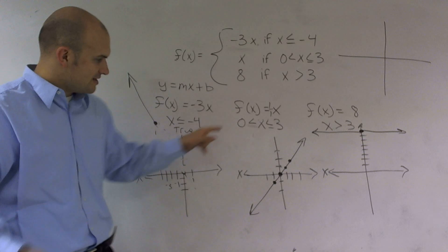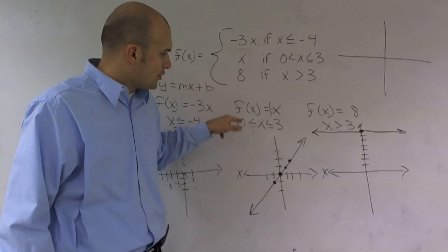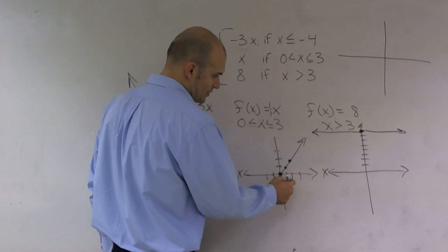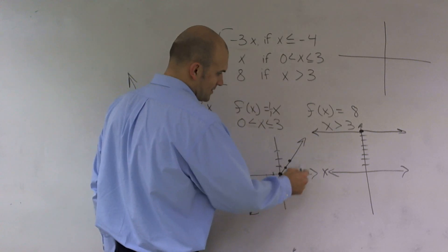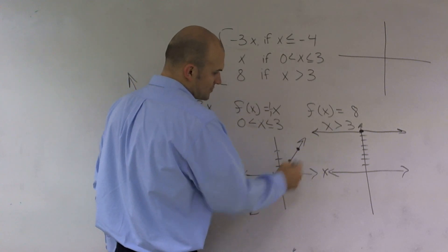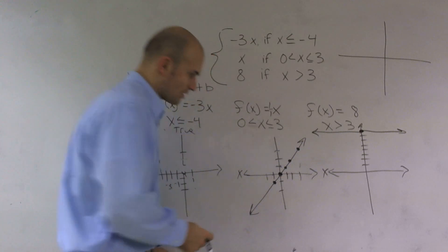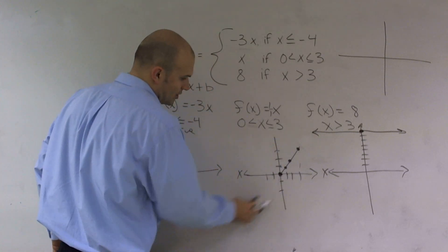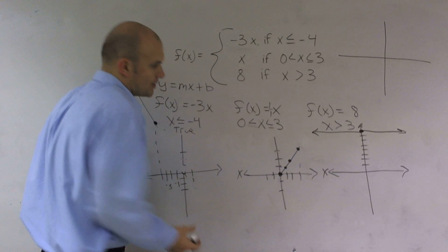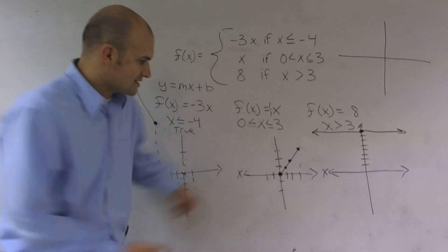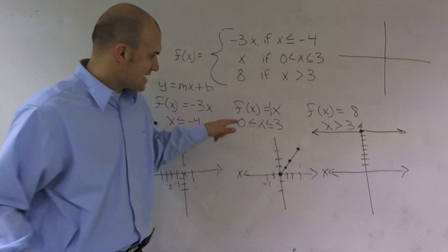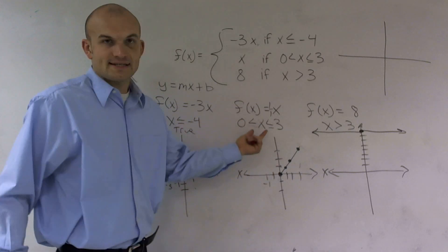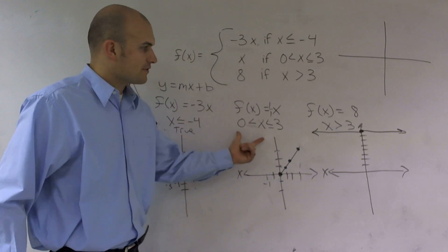The second function is only true for all points between zero and three. So I look at between zero and three — only between these two points does my graph work. The rest of the points, greater than three or less than zero, are not part of my graph. For example, x = -1 is not true for this function, so that doesn't count.